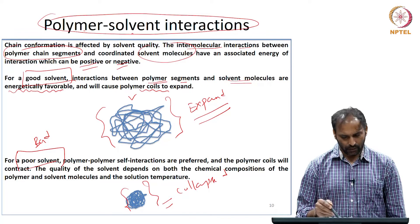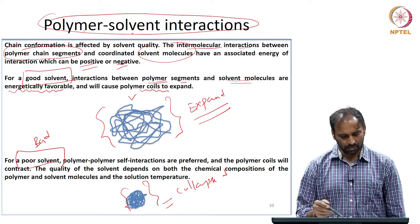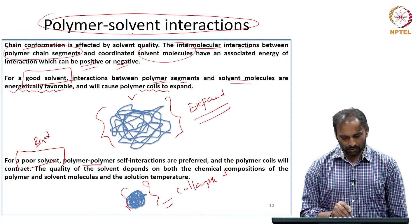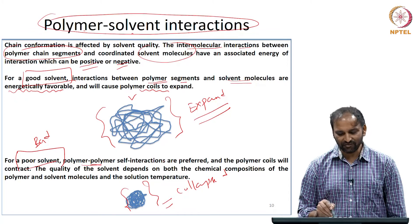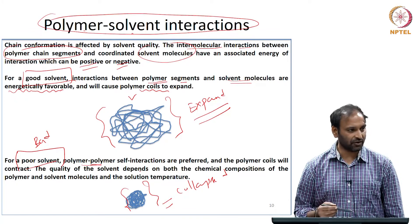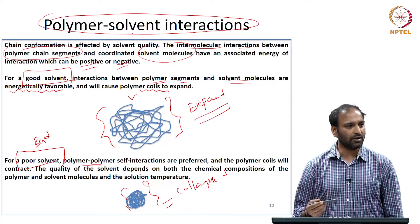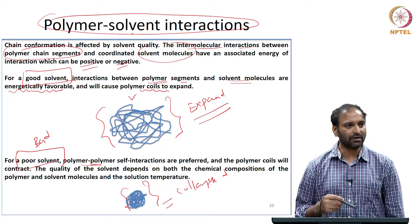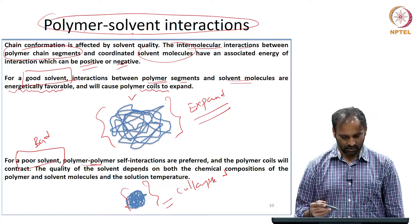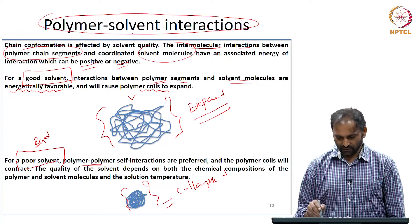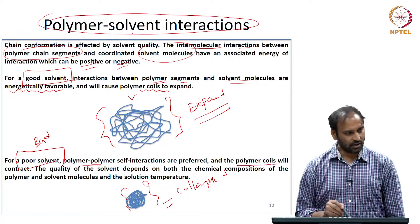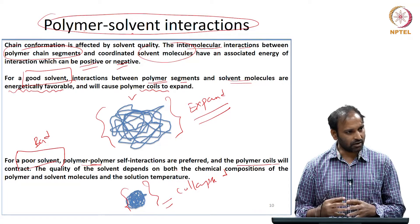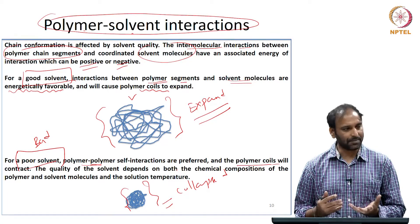On the other hand, when some polymers are put in what are called poor solvents, the polymer-polymer self-interactions are preferred. The polymer would like to be in contact with its own molecules rather than being in contact with the fluid. Therefore, the polymer coil contracts and collapses.